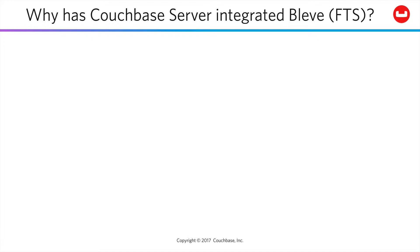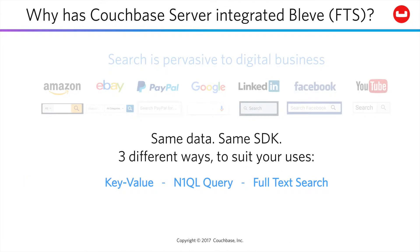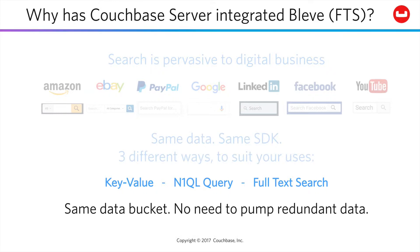Couchbase Server has integrated FTS because search is pervasive in digital business — virtually every significant website and informational app uses full-text search in some fashion. Couchbase 5 lets you access all your same data using the same SDK three different ways: key-value, N1QL query (which is SQL for JSON), and now full-text search — all from the same data bucket with no need to pump redundant data around your network.